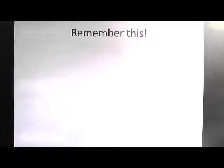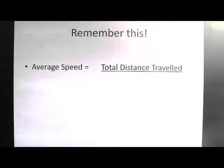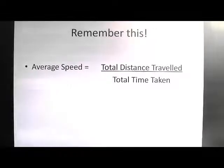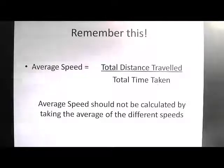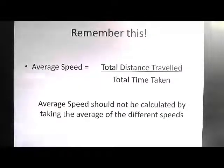Remember this important point: in certain problems you will be asked to find the average speed. In that case, use the formula: total distance traveled divided by total time taken equals average speed. Average speed should never be calculated by simply taking the arithmetic average of the different speeds given. Calculate the total distance and the total time, then divide.